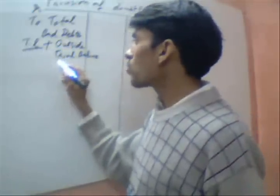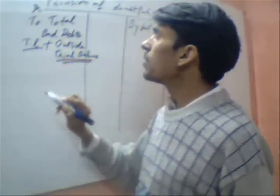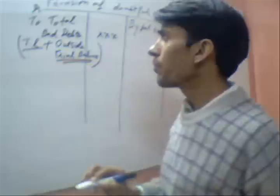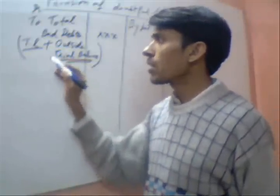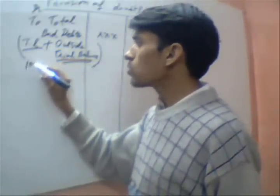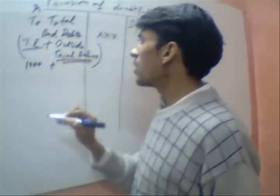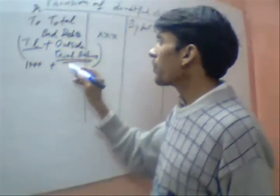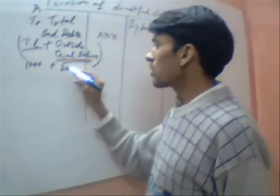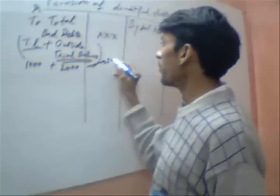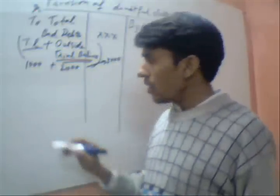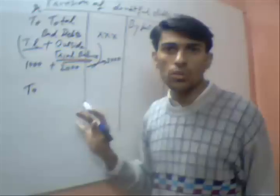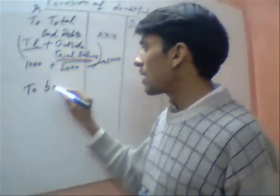Add the trial balance bad debts and the outside trial balance bad debts together and fill in here. For example, suppose your trial balance shows 1000 bad debts and your new bad debts not shown in the trial balance is 2000, you should write 3000. After this, you have to close this account by writing 'To Balance Carry Down'.